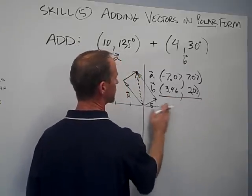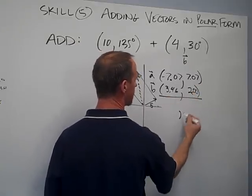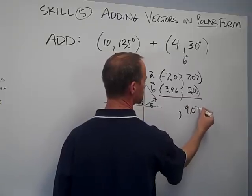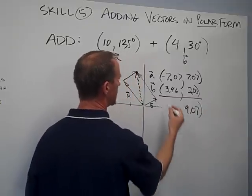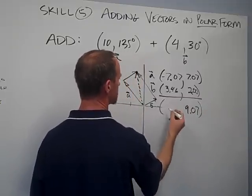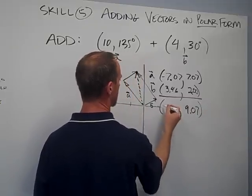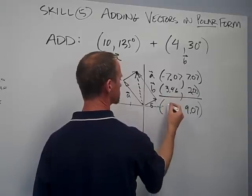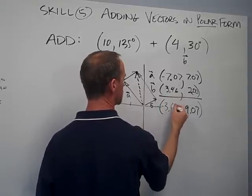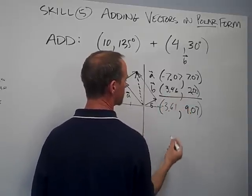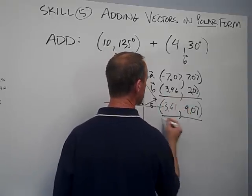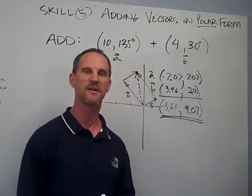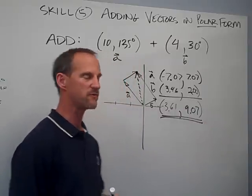Then I simply add these. For my y value I get 9.07, and when I add the x components I get negative 3.61. So that is the resultant vector in rectangular form.